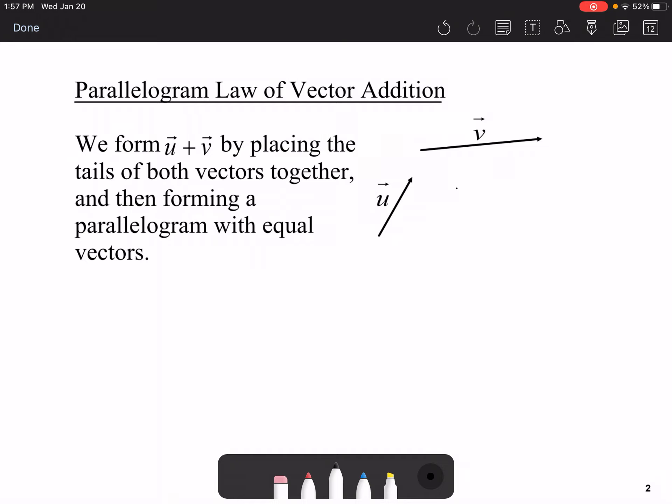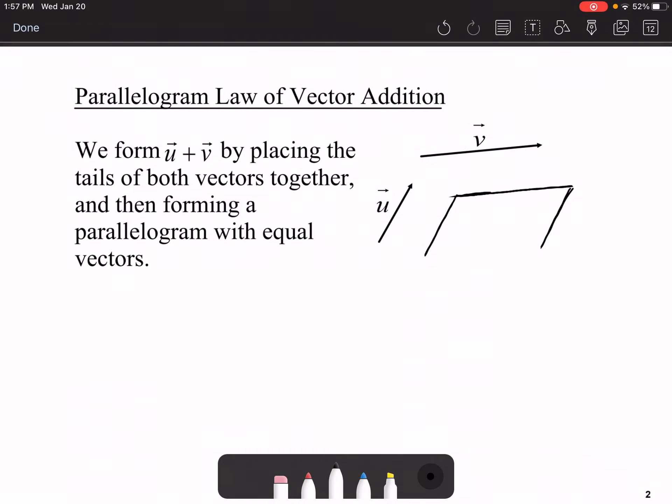Let me show you. Let's redraw V right here. I'm going to redraw the vector U here and here. And again, redraw the vector V right there. Now, I'm going to put all the vectors' heads on them so that you can see which way they're headed.